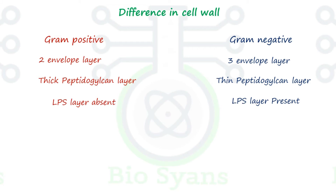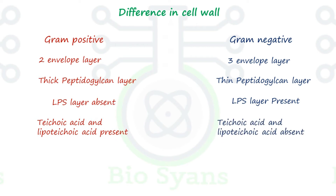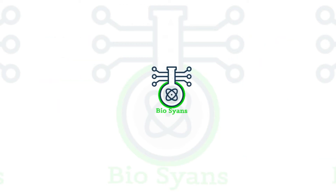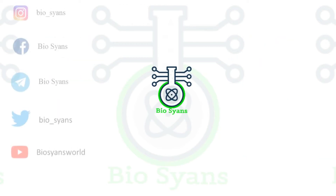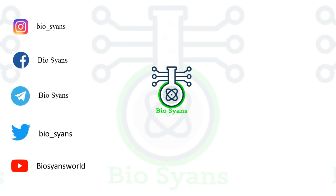The LPS layer is absent in gram-positive bacteria and present in gram-negative bacteria. Teichoic acid and lipoteichoic acid are present in gram-positive bacteria but absent in gram-negative bacteria. There is no periplasmic space in gram-positive bacteria, whereas there is a periplasmic space present in gram-negative bacteria. I hope you liked the video. You can also connect with us through other social media platforms. Thanks for watching.